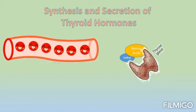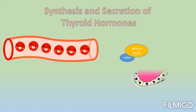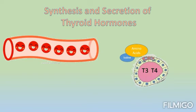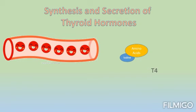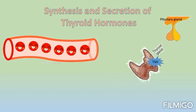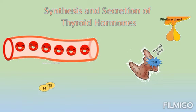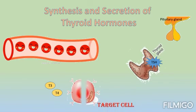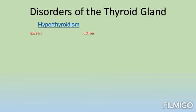How does the thyroid gland synthesize and secrete thyroid hormones? Blood transports amino acids and iodine to the thyroid gland and precisely to the follicles. The follicle uses them to synthesize the thyroid hormones T3 and T4, which are kept stored inside the follicle until the body needs them. Under specific stimulation from the pituitary gland, situated in your brain, through a hormone called TSH (thyroid stimulating hormone), the thyroid gland releases T3 and T4. These are transported by blood to the target cell or target organ, where they have specific receptors.